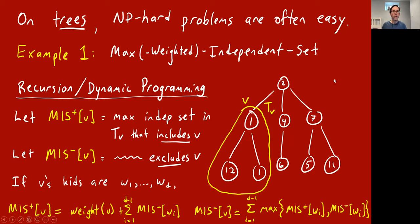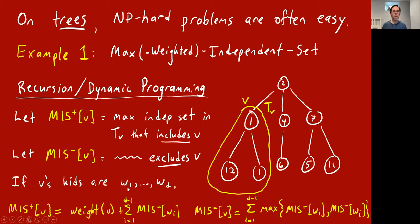In general, if you have some vertex v with children w_1 through w_d, how do you fill out MIS+[v]? This is when you're going to be taking v into your independent set. On one hand, you get the weight of v, because you're choosing v. But you're not allowed to choose any of v's children, since it's supposed to be an independent set. So you sum over all the children — up to d — the MIS− value for each child, which you've already computed.